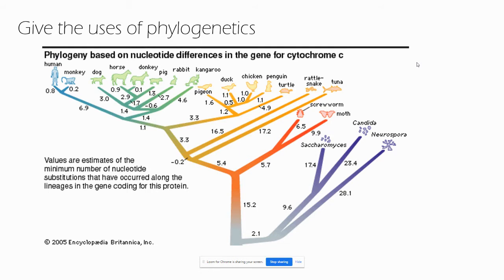Genetic evidence can reveal relatedness that is obscured by divergence or convergence. Sometimes very genetically different organisms that speciated long ago can look very similar — for example, sharks and whales look very similar, even though one is a mammal and one is a fish. They've converged on a similar body design, but through phylogenetics we can tell they're actually evolutionarily very distant. Similarly, if you look at mammalian groups, there's massive diversity in features and morphology — humans, whales, and horses look very different, but are all mammals.